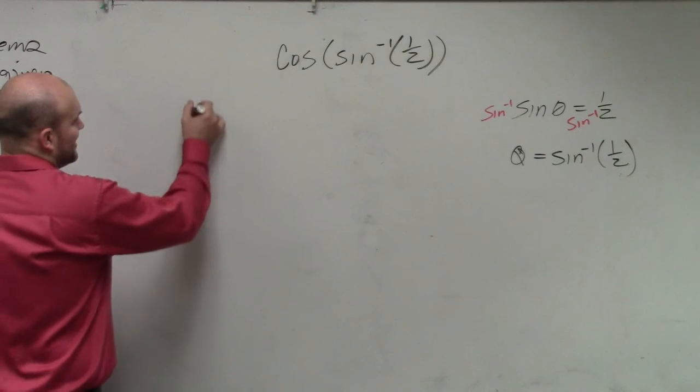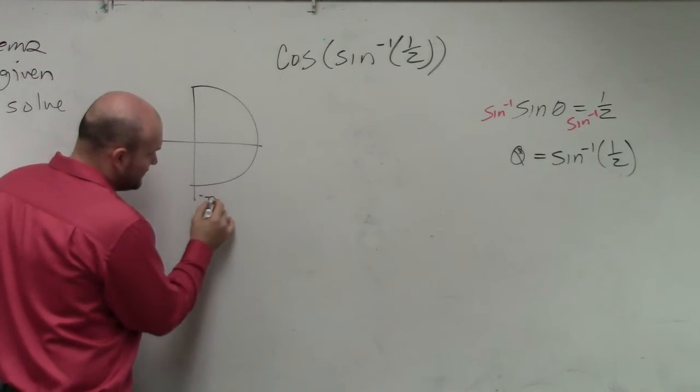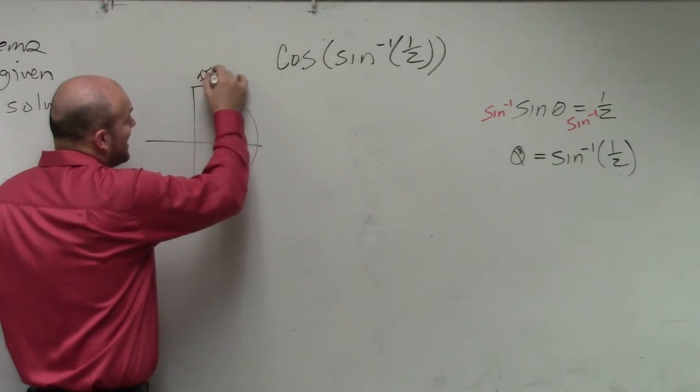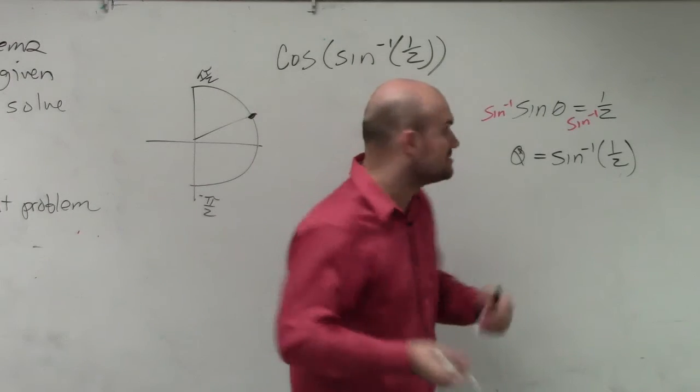The best way I like to do that, guys, is give you a visual representation. The restriction is between negative pi halves and pi halves. Is pi over 6 within that range? Yes. So good. OK.